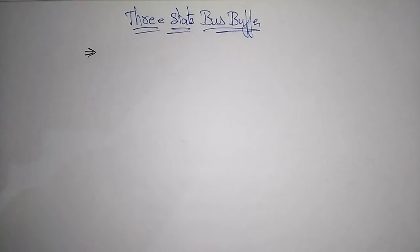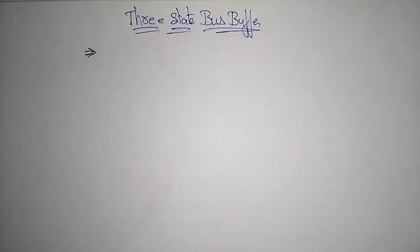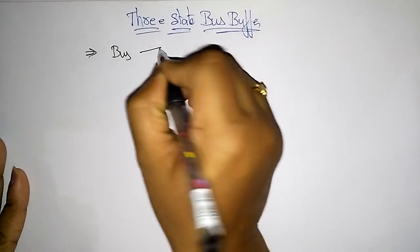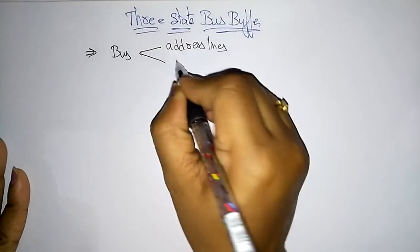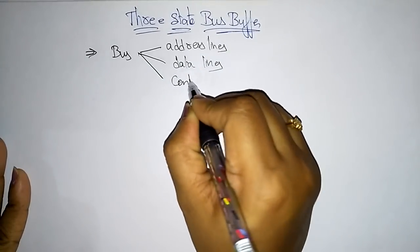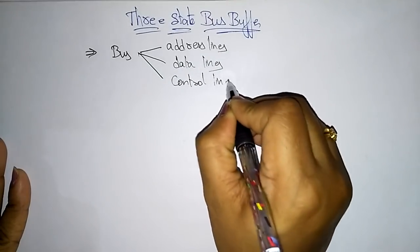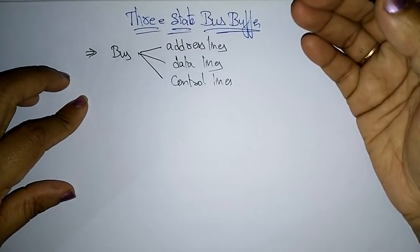Coming to the next topic: three-state bus buffer. Before discussing what a three-state bus buffer is, let us first start with what is a bus. A bus is nothing but a set of lines — those lines or bus consisting of address lines, data lines, and control lines. This group of lines you call a bus. Address lines indicate from where we have to get the data and from where we have to put the data.